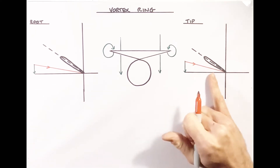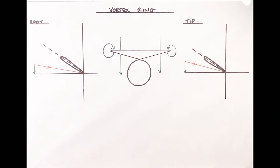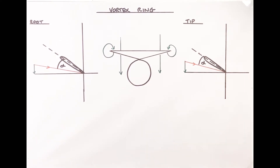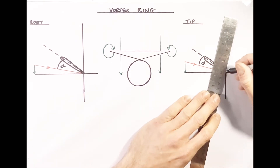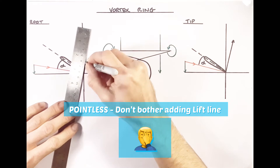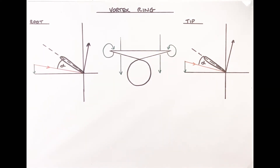We have our induced flow and our resultant airflow giving us our angle of attack and lift. Now let's assume that for whatever reason we're in the hover and we've started an inadvertent or deliberate descent. To do that, we lower the collective and the aircraft starts to descend downwards. When it descends, the aircraft starts to experience an airflow coming up from underneath, because we're essentially descending down into a static column of air.